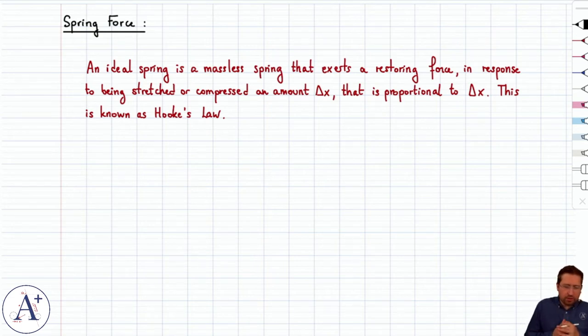So a spring - we can all agree on what a spring is. When you buy a spring, it has a certain length, and then you can stretch it or compress it. If you do that, it's either going to pull back or push back depending on whether you stretch or compress. Actually, the amount of force with which it pushes back is going to be proportional to the amount delta x that you compressed it or stretched it, and that's known as Hooke's law.